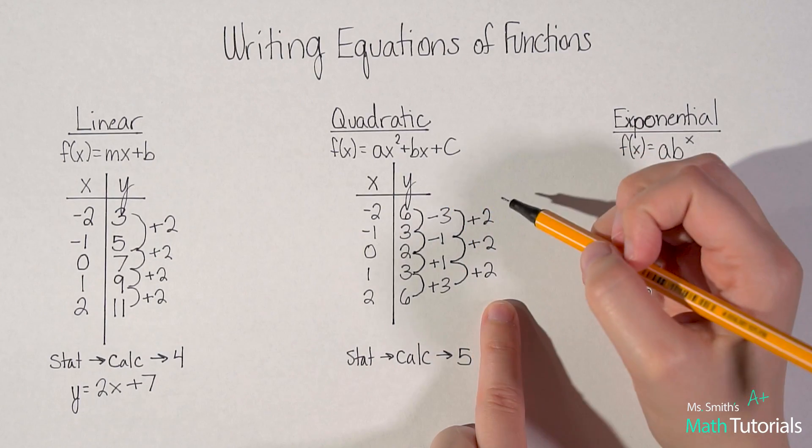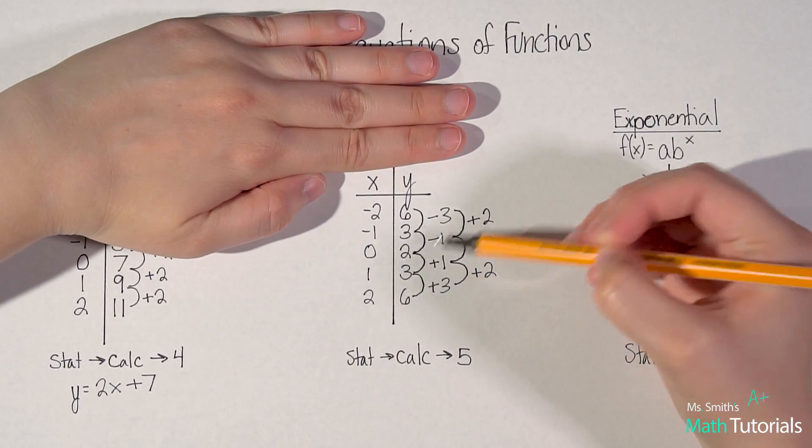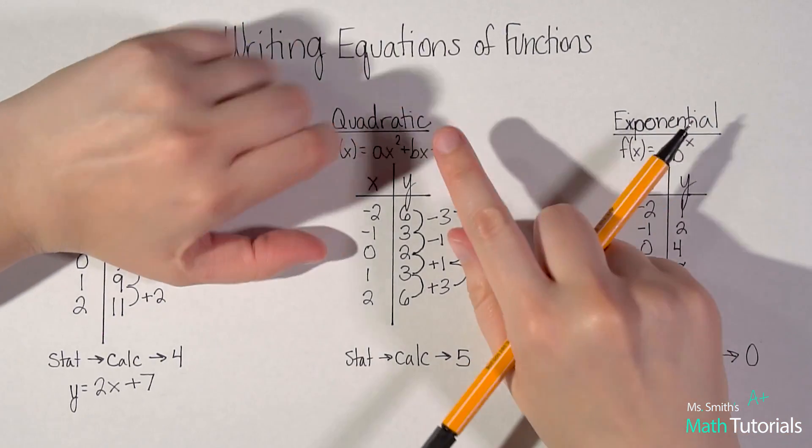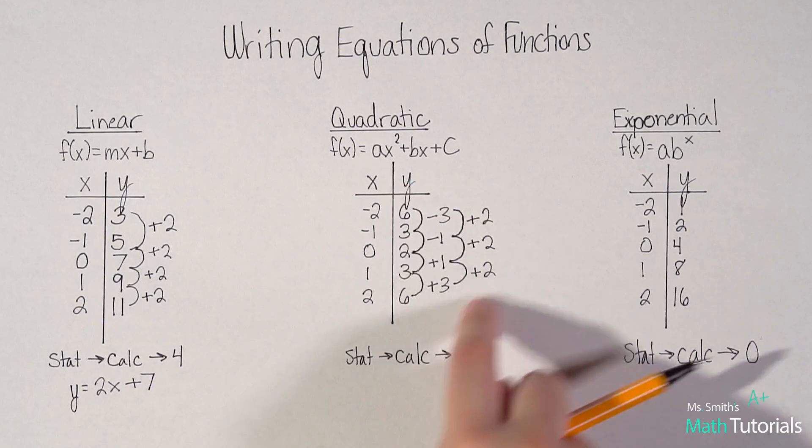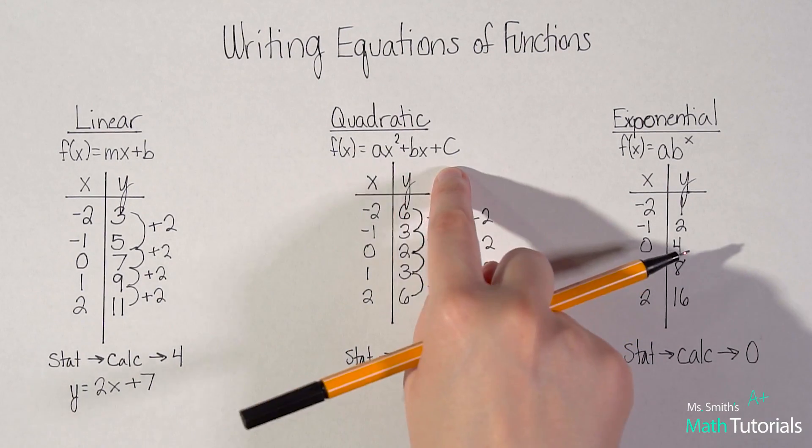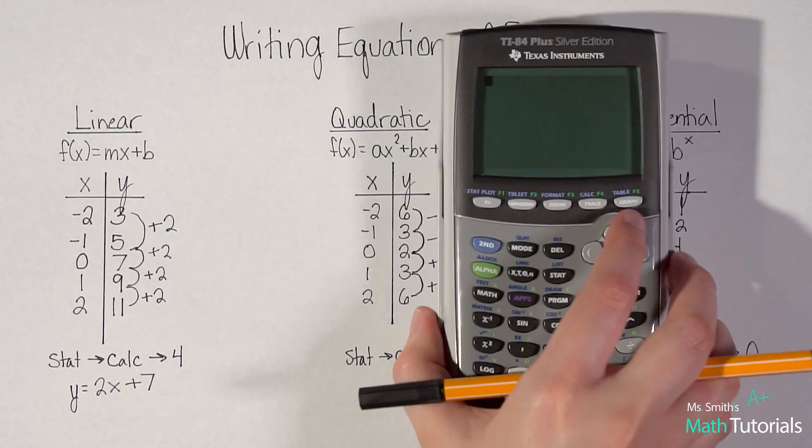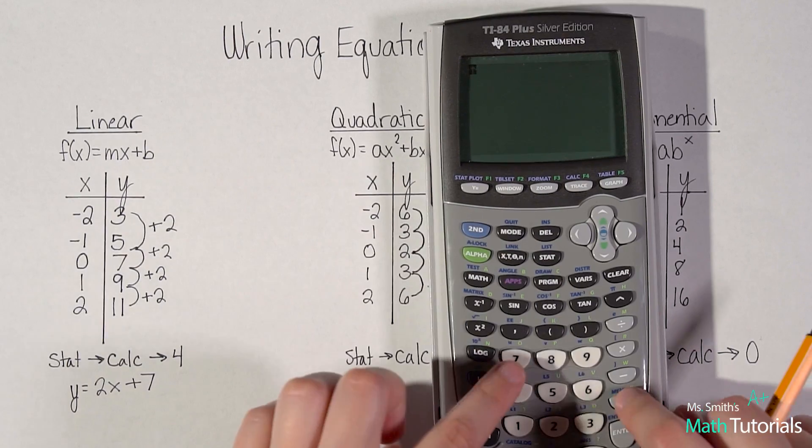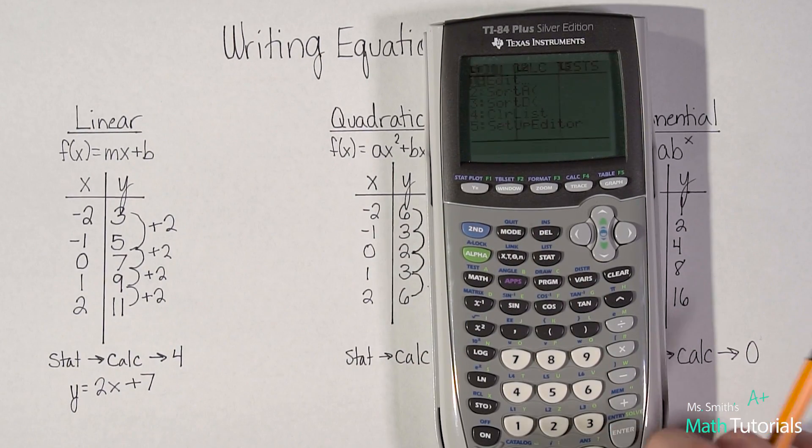Do you see how it took two tiers to get a solid pattern? Because it took two tiers, I know it's a quadratic equation. If I just created this pattern and I was able to figure out on the second tier I got it, you know it's quadratic.